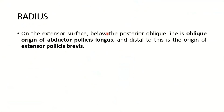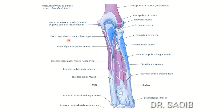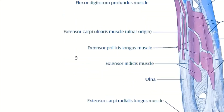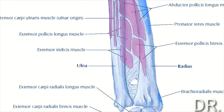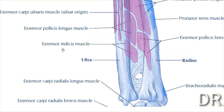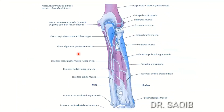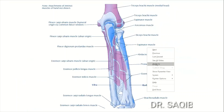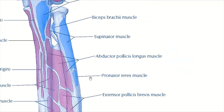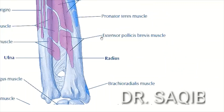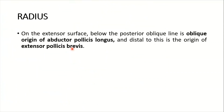On the extensor surface, below the posterior oblique line, is the oblique origin of abductor pollicis longus, and distal to this is the origin of extensor pollicis brevis. Here you can see the extensor pollicis longus, abductor pollicis longus, pronator teres, and extensor pollicis brevis from the extensor surface of the radius.